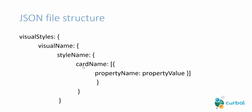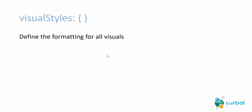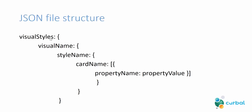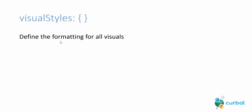Then we have the cardName. A cardName is basically the properties you can set for a visual — the different settings that you have for a visual. And then each setting has properties. So if we start with visualStyles, the highest level, this is the container for the formatting for all visuals — you just write visualStyles and then start putting in your visuals within these brackets.